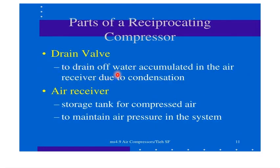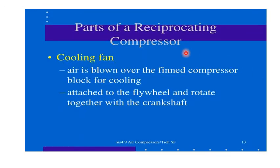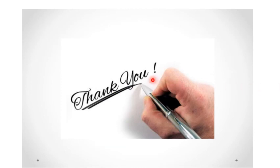The drain valve drains off water accumulated in the air receiver due to condensation. The air receiver is the storage tank for compressed air to maintain air pressure. The compressor block contains the working parts of the compressor including the inlet valve, outlet valve, and piston, as well as the crankshaft and connecting rods. The cooling fan blows air over the compressor block for cooling and is attached to the flywheel, rotating together with the crankshaft.